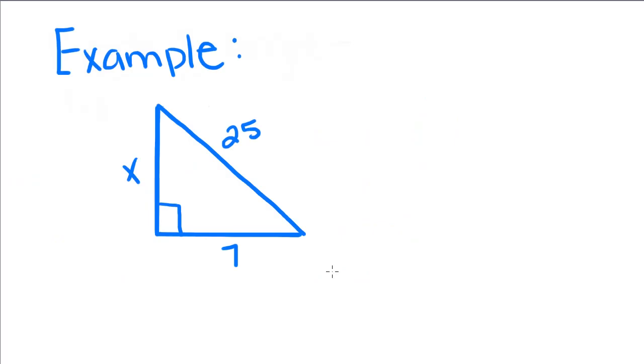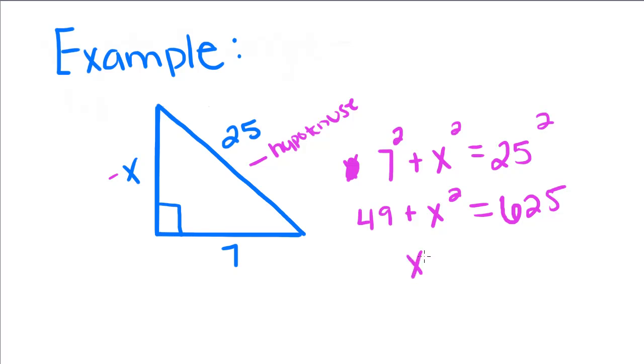Now we're going to do another example. So notice that we know what our hypotenuse is equal to, but we want to know what this is equal to. So like we would normally, we're going to take a squared plus b squared and set it equal to the hypotenuse squared. So 49 plus x squared is equal to 625. So x squared is equal to 576, and if we take the square roots of both sides, we get x equal to 24.